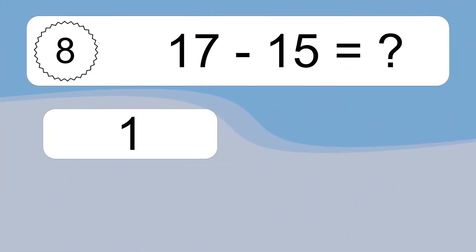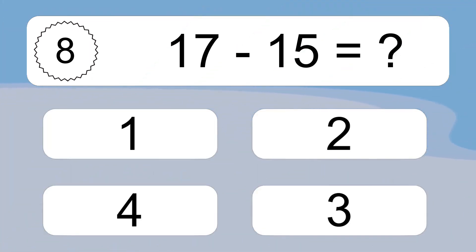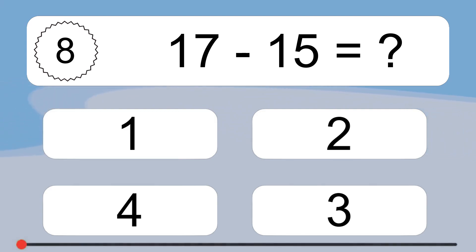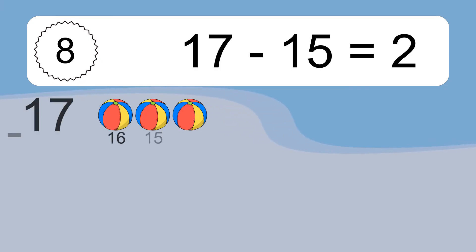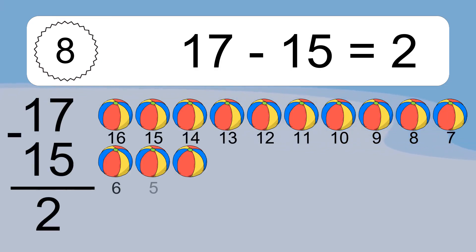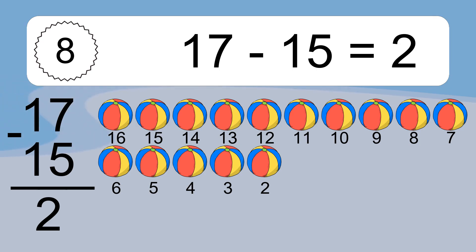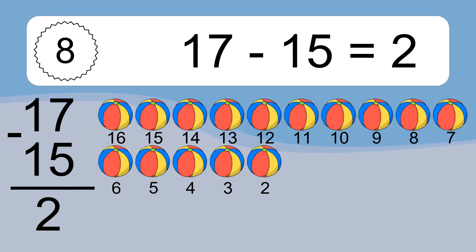17 minus 15 equals what? 17 minus 15 equals 2. Let's count it: 16, 15, 14, 13, 12, 11, 10, 9, 8, 7, 6, 5, 4, 3, 2.